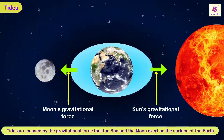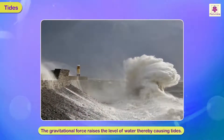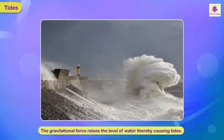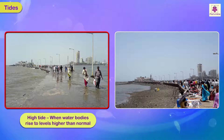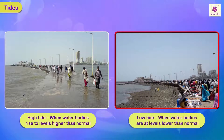Tides are caused by the gravitational force that the Sun and the Moon exert on the surface of the Earth. This gravitational force raises the level of water, thereby causing tides. High tides occur when water bodies rise to levels higher than normal, while low tides occur when the waters are at levels lower than normal.